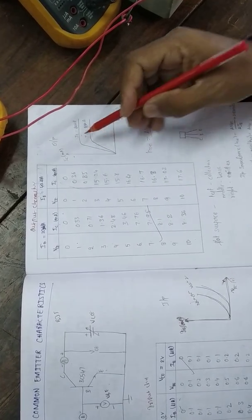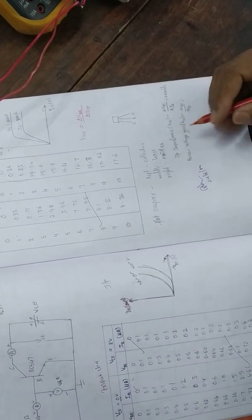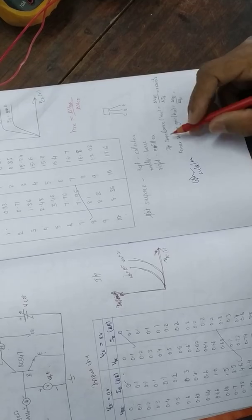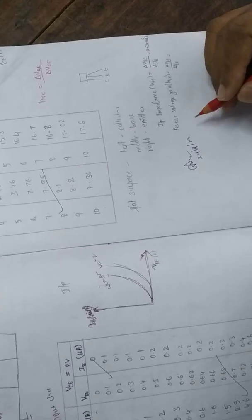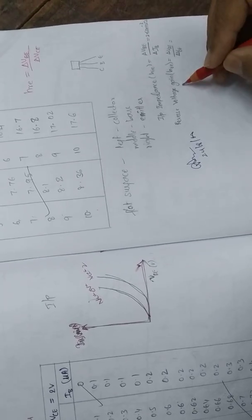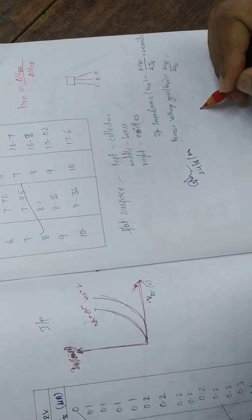From these characteristics, we are going to find out the H parameters: input impedance, output resistance, reverse voltage gain, and current gain. These are the H parameters that can be calculated. Thank you.